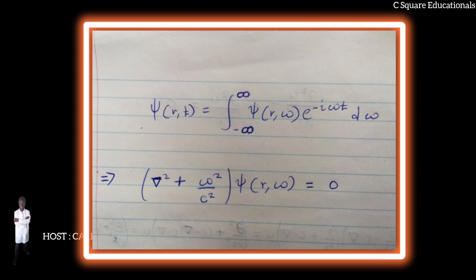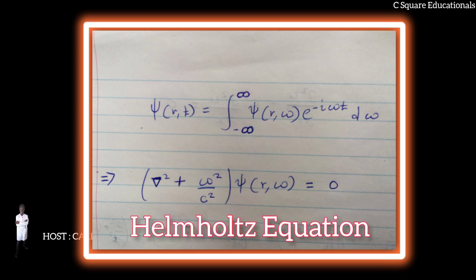So we get ∇² + ω²/c² ψ(r,ω) = 0. This is the Helmholtz equation and can be solved using separation of variables.